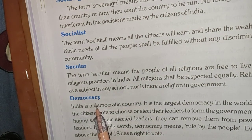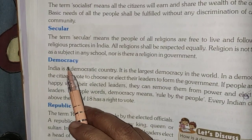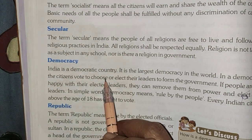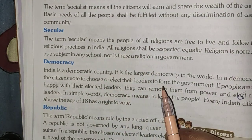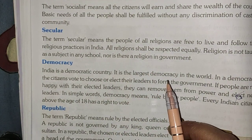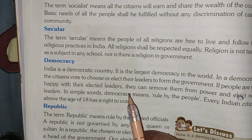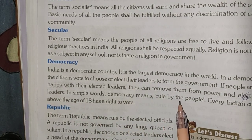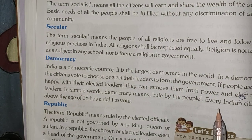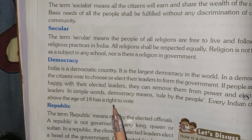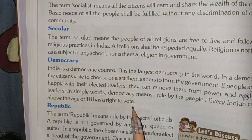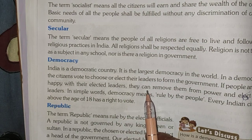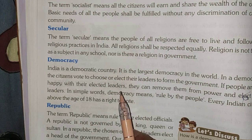Now next comes democracy. India is a democratic country. A democracy means a system in which the government of a country is elected by the people. In simple words, democracy means rule by the people. Every Indian citizen above the age of 18 has a right to vote. The citizens of our country elect our leaders — this is democracy.